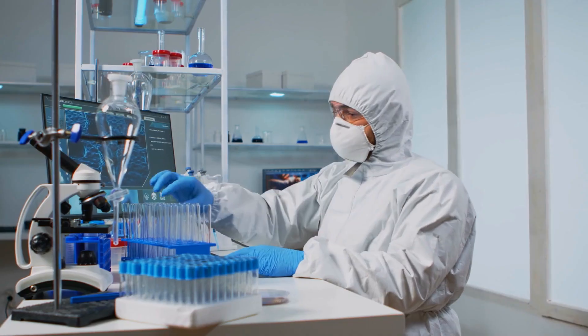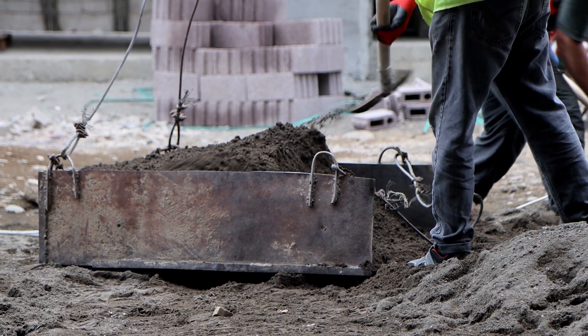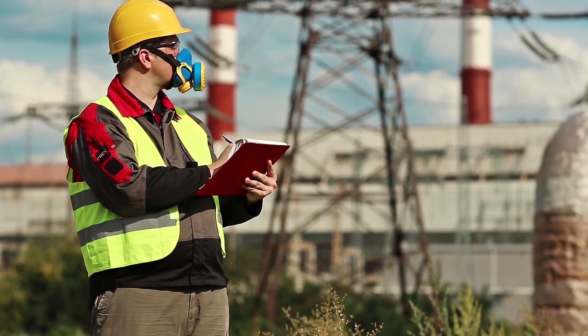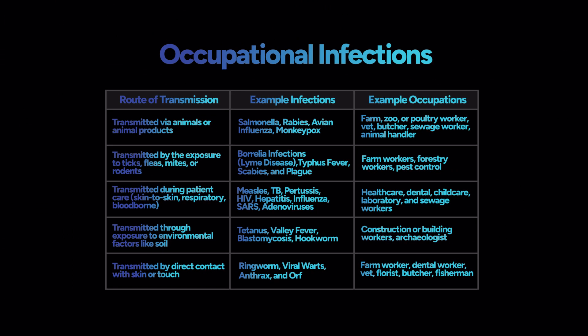TB infections are most common outside of the United States, and in parts of Asia and Africa. For an infection to be categorized as an occupational infection, it must involve an infectious agent associated with the workplace, and the job must include specific activities that could expose the worker to the agents. As with many other infectious diseases, these can often be prevented with vaccines, health education, and in-place preventive programs. Occupational infections are classified based on their routes of transmission, including transmission via animals or animal products, vectors like ticks and rodents, environmental factors like soil, and from direct skin-to-skin contact or through the air. Depending on your work environment, you may require detailed and specific training on blood-borne pathogens, for which additional training is available.